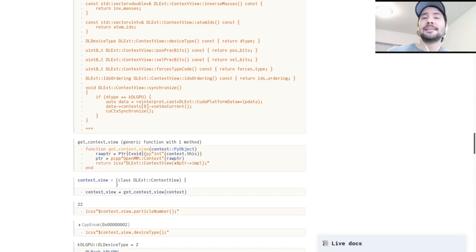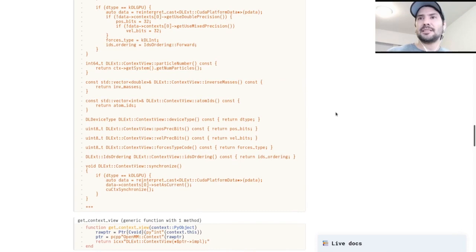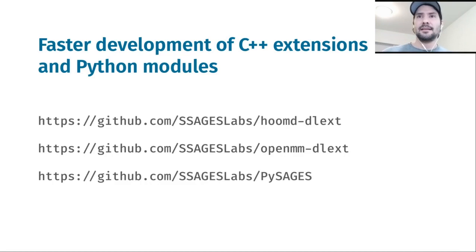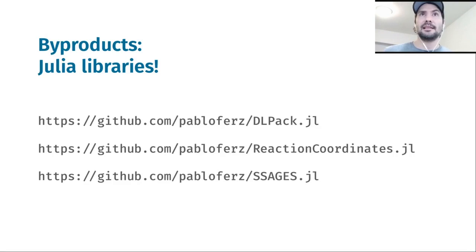I can take all of this C++ code, once I'm satisfied with it, and move it to appropriate files, then iterate over this process until I get a more or less complete C++ library. I cannot claim to be a strong C++ developer, but these interoperability capabilities that Julia provides have made this whole process much easier and much faster for me. As a consequence, I was able to write a couple of C++ libraries with Python interfaces and another Python package. This also led me to write some Julia libraries as a byproduct, and you can find them on the slides.